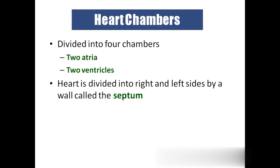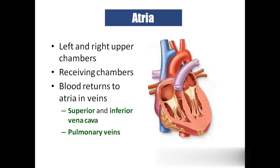The heart is divided into right and left halves by a septum — we call the wall as septum. In this picture you can see: this is the right atrium and this is the left atrium. These are separated by a wall called the interatrial septum.